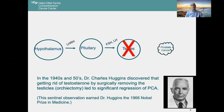In the 1940s and 50s, Dr. Charles Huggins discovered that getting rid of testosterone by surgically removing the testicles — that's termed an orchiectomy — led to significant regression of the prostate cancer. This important observation earned him the Nobel Prize in Medicine. And in many ways, it's still what we do today.